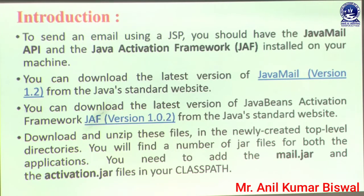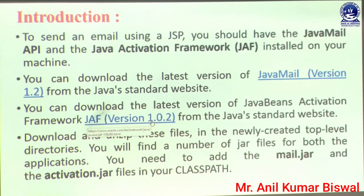A user must take the help of this JavaMail version, which helps to process the website in our JSP part. You must also download the latest version of the Java Beans Activation Framework, known as JAF — that version should be 1.0.2 from the Java standard website, because this version must be installed. Without this version a user can never process any type of programming related to our JSP concept. Additionally, the user must download two files related to our JAR file.